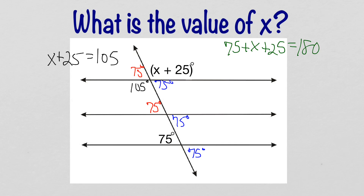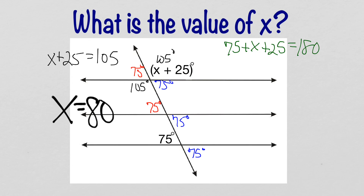Both equations give the same answer: x equals 80. Remember, that does not mean the angle itself is 80 — the angle is 105. What it means is x equals 80, and sure enough, 80 plus 25 is 105. We use our knowledge of corresponding, vertical, supplementary, same side interior, and alternate interior angles to solve problems. Hopefully you guys do well with this. Good luck.